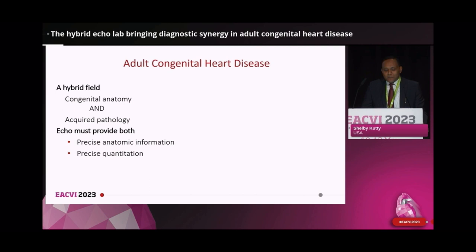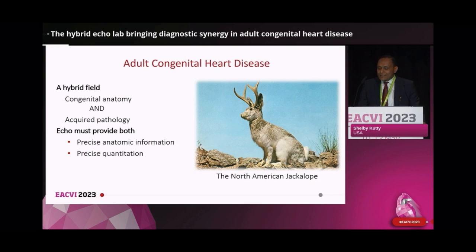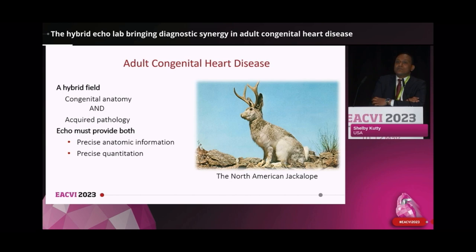Like a pediatric echo lab would, it must provide precise anatomic information and how surgery or catheter interventions would have modified it. Like an adult lab would, it must provide precise quantitation of cardiac function and pathophysiology. The North American jackalope is a hybrid like the ideal ACHD echo lab — it incorporates the features of both the antelope and the jackrabbit, and like the ideal ACHD echo lab, it's often dreamt of but seldom seen. Our goal today is to hunt for that elusive creature, the ideal lab for ACHD.